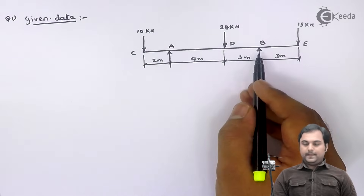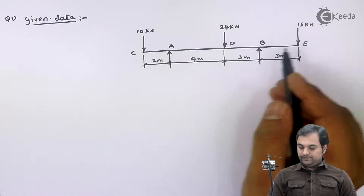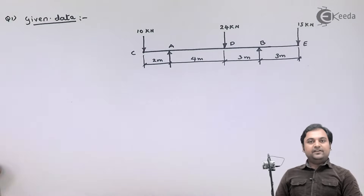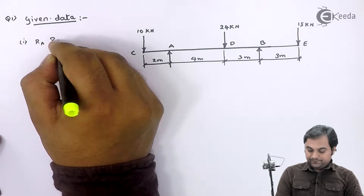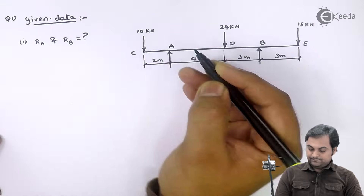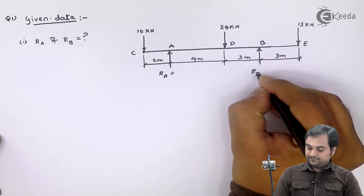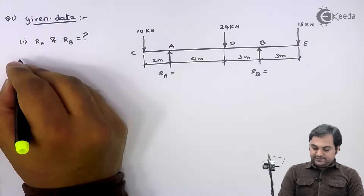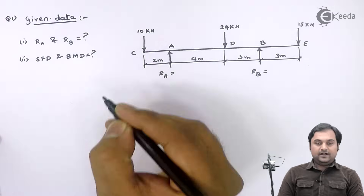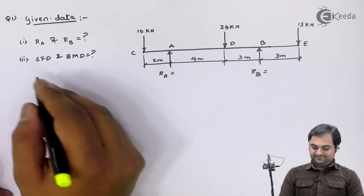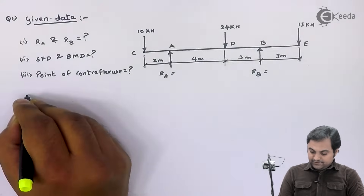We have an overhanging beam supported at point A and point B, with point loads of 10 kilo Newton, 24 kilo Newton, and 15 kilo Newton acting on this beam. For this diagram we have to find the support reactions — that is RA and RB — then calculate SFD and BMD, and after that find the point of contraflexure.